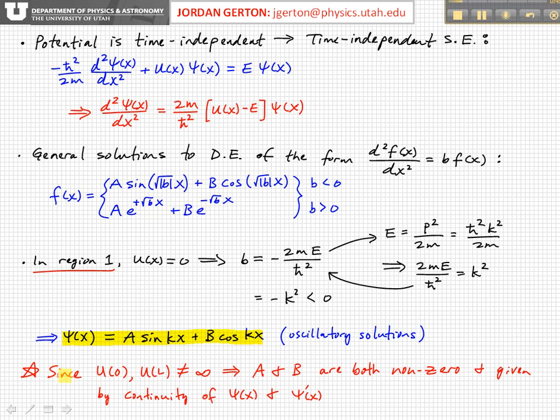So, it's also important—a critical difference between the finite and infinite potential well—is that here the potential at zero and at L, at the edges of the box, is not infinite. In the infinite potential well, due to boundary conditions, we were able to say that the wave function had to be zero at the edges of the box. Here, since the potential is not infinite, we can't do that.